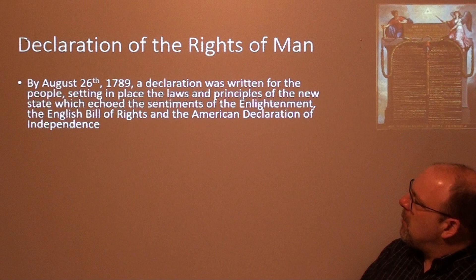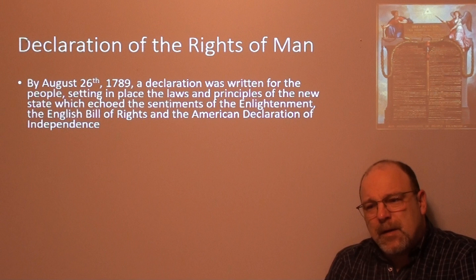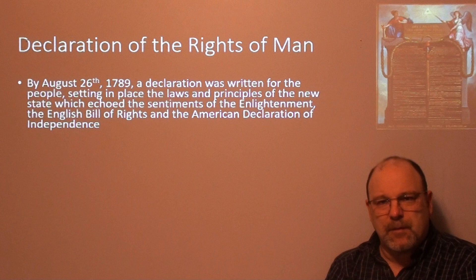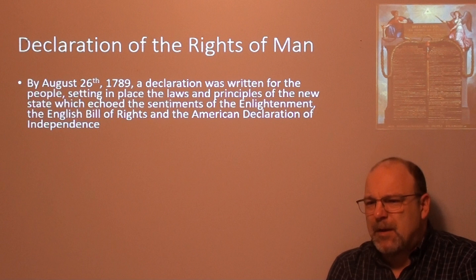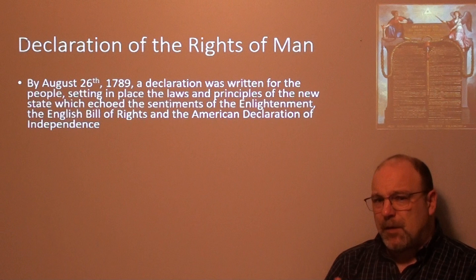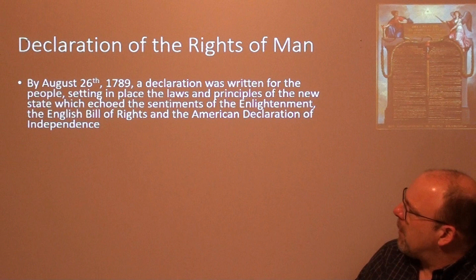By August 26, 1789, a declaration was written for the people, setting in place the laws and principles of the new state which echoed the sentiments of the Enlightenment, the English Bill of Rights of 1689, and the American Declaration of Independence. The French had the advantage of being the third major document written heading towards what we consider today our fundamental values of democracy. The American Declaration of Independence is still regarded by many as the greatest framework of democratic constitutionalism.